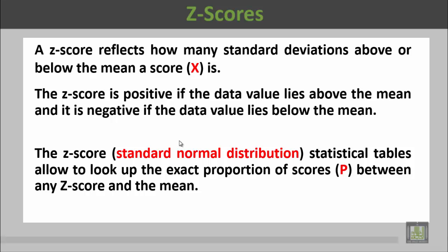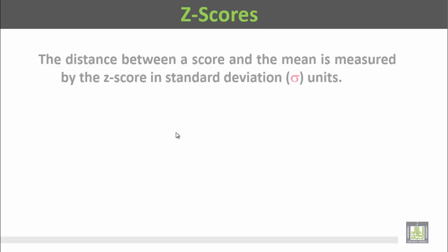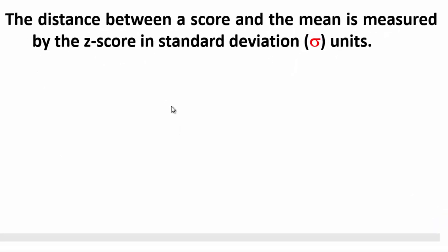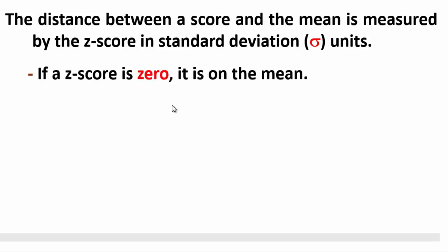The z score and the standard normal distribution statistical tables allow us to look up the exact proportion of scores p between any z score and the mean. هناك جداول إحصائية تمكننا من حساب النسبة proportion بين القيمة والمتوسط الحسابي. The distance between the score and the mean is measured by the z score in standard deviation units — وحدة القياس للـ z score هي السيجما، أي الانحراف المعياري.